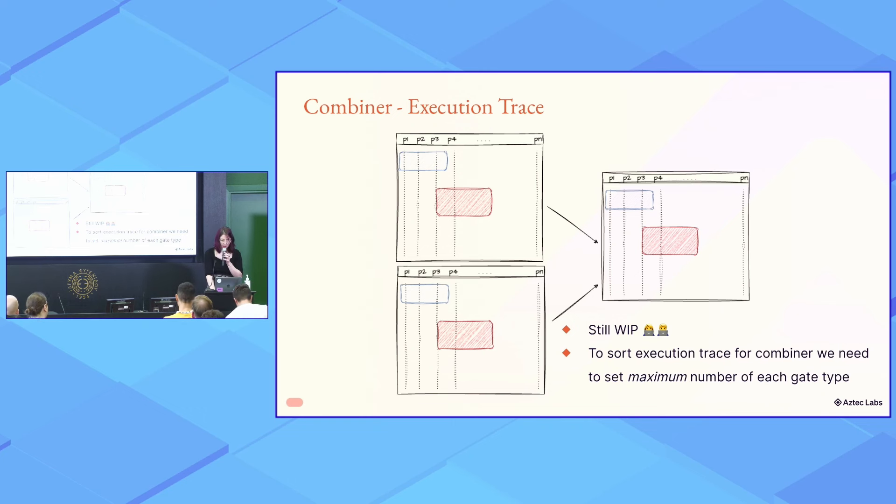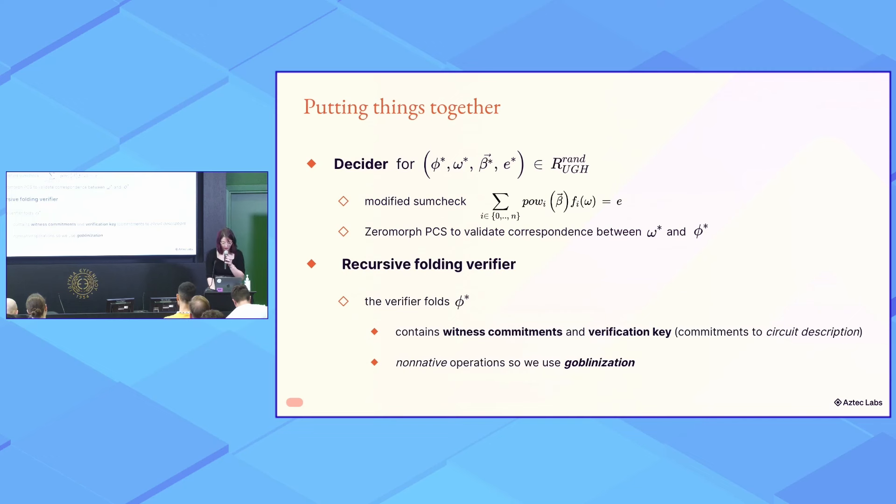So now let's see some benchmarks. Well, no. Actually, we're going to talk a bit about decider and recursive folding verifier. So the decider is actually pretty easy. You just have to do a sum check that's of the relaxed identity. And the PCS will just validate for the folding omega and phi. And in the folding verifier, this is the group operation that it does, the witness commitments and the verification key, which is the commitments to the circuit description. And these are not native, but you can use goblinization.